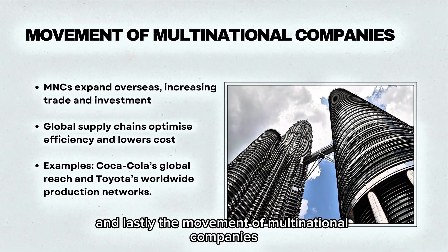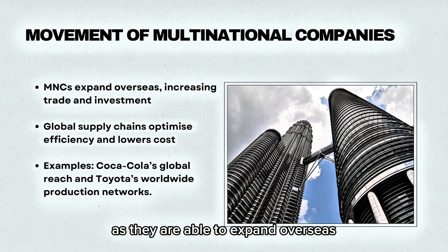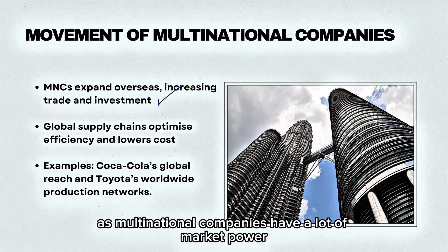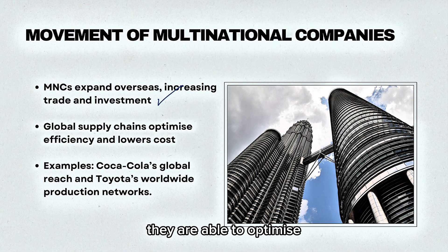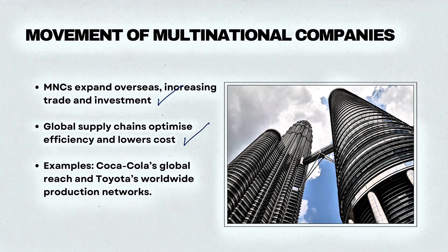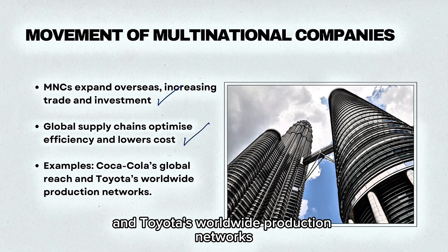The movement of multinational companies has also facilitated globalization, as they are able to expand overseas, which increases trade and investment within host countries. As multinational companies have a lot of market power, they are able to optimize efficient use of supply chains, which lowers costs. Some examples include Coca-Cola's global reach and Toyota's worldwide production networks.